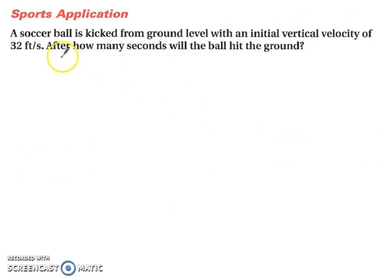So, let's start with that formula that we needed. So, we have our height in relation to time equals negative 16t squared plus, well, we know our vertical velocity is 32 feet per second. So, we have 32t. And you're kicking it from the ground. So, therefore, your initial height, or your original height, is 0.